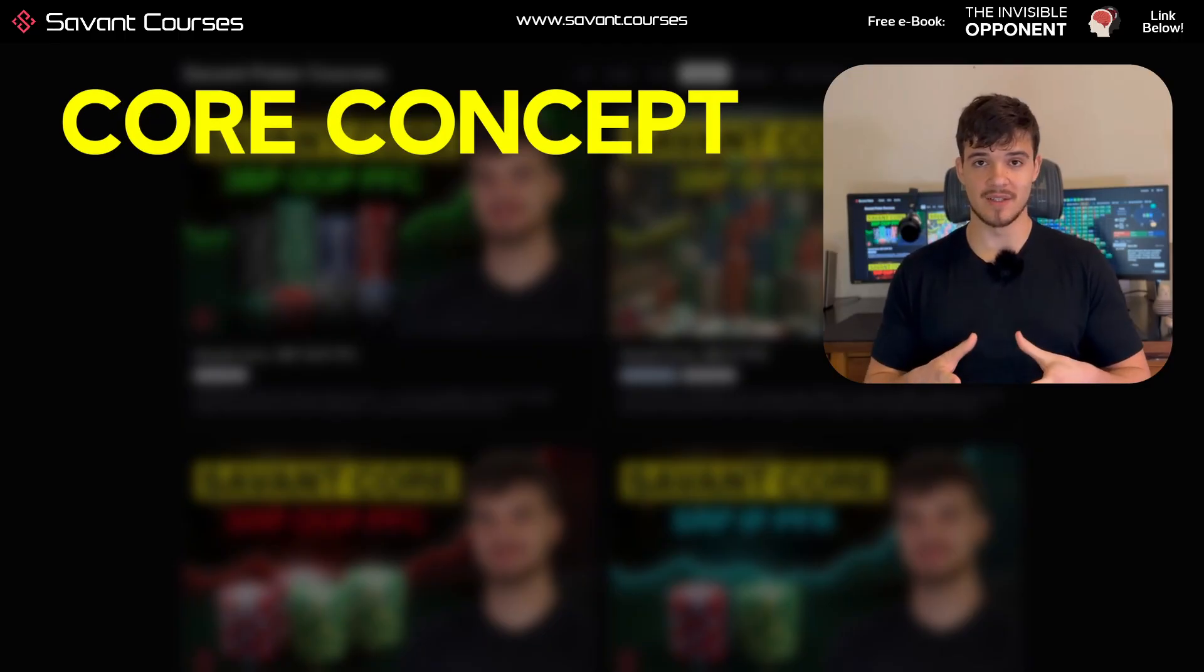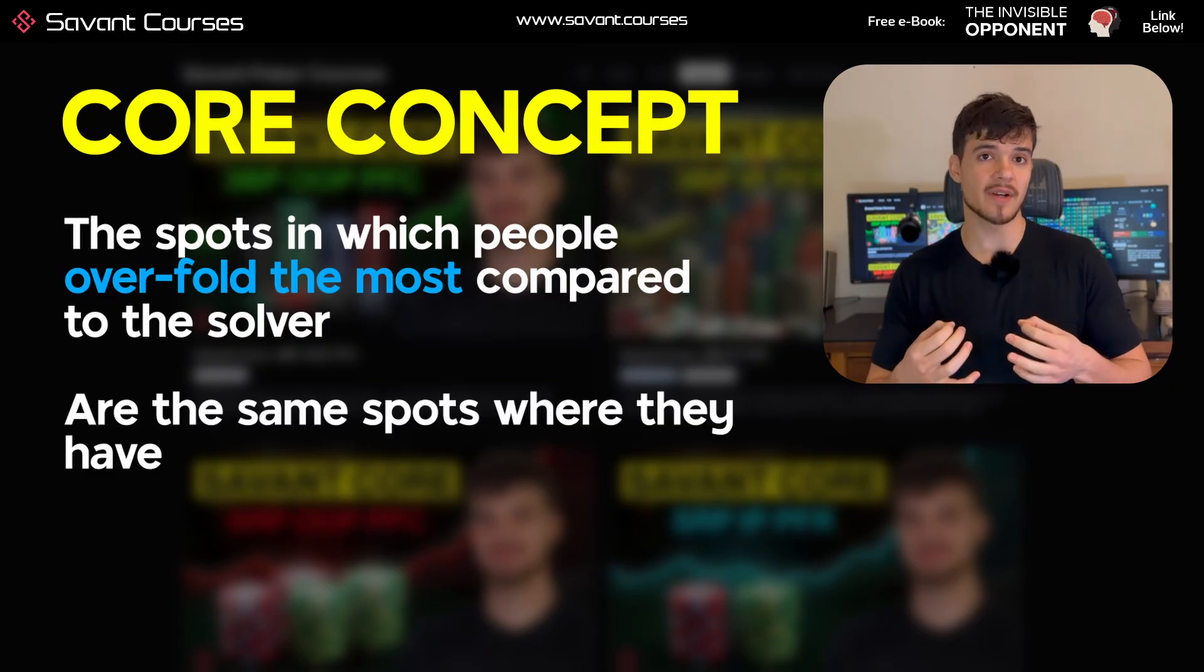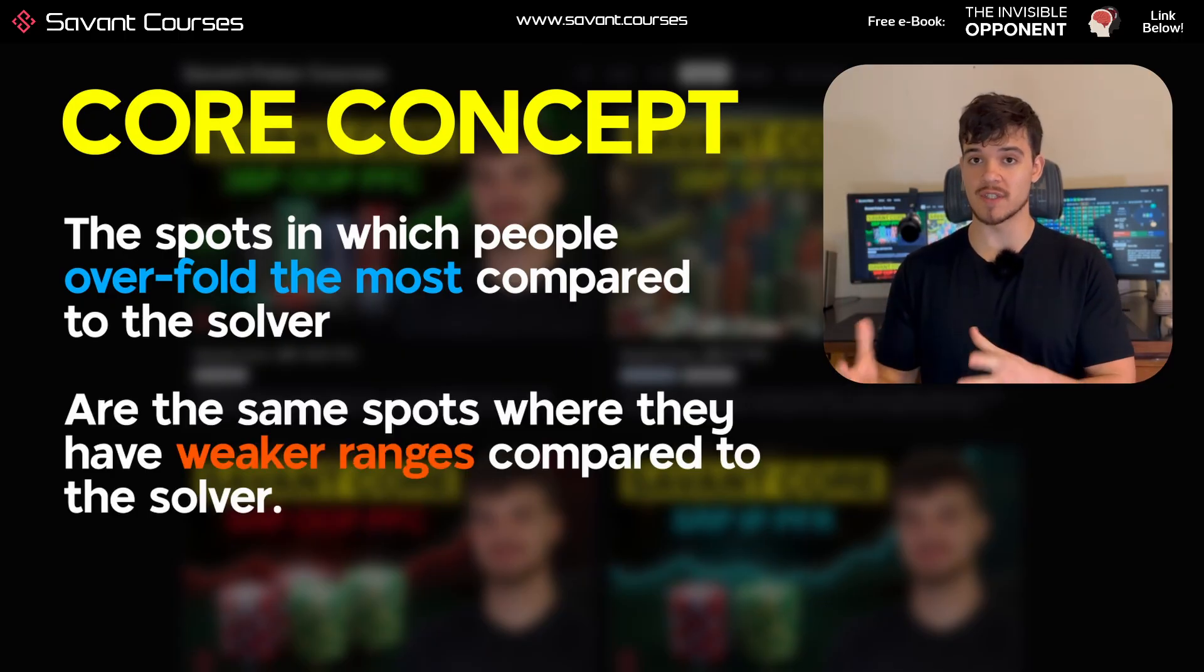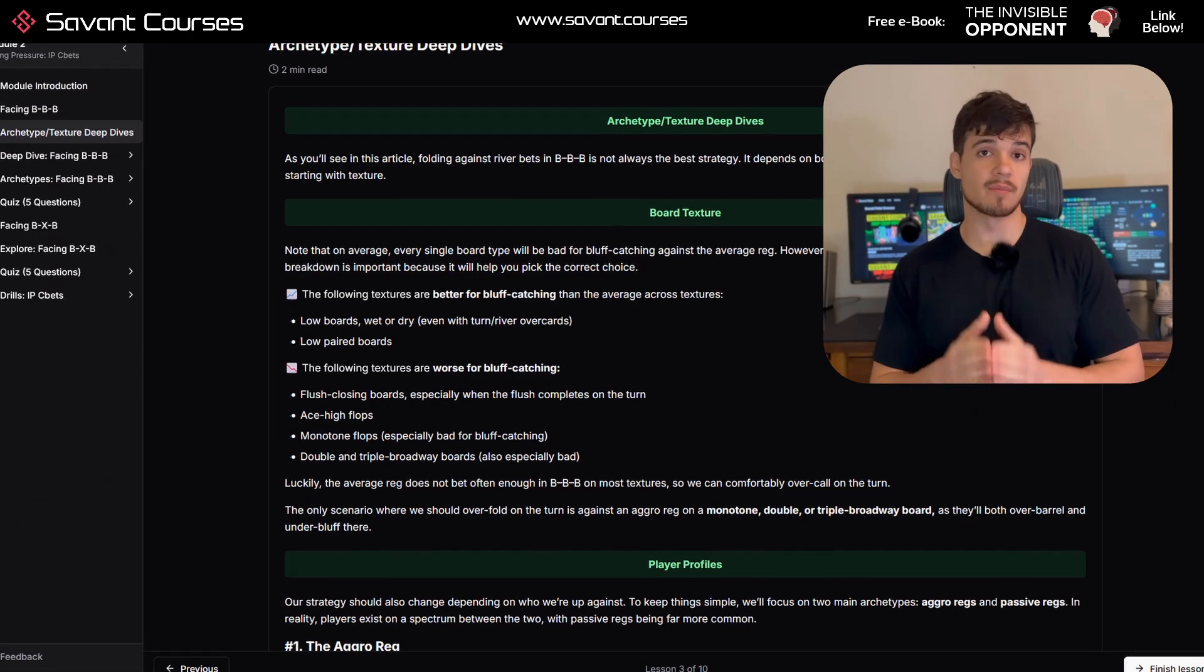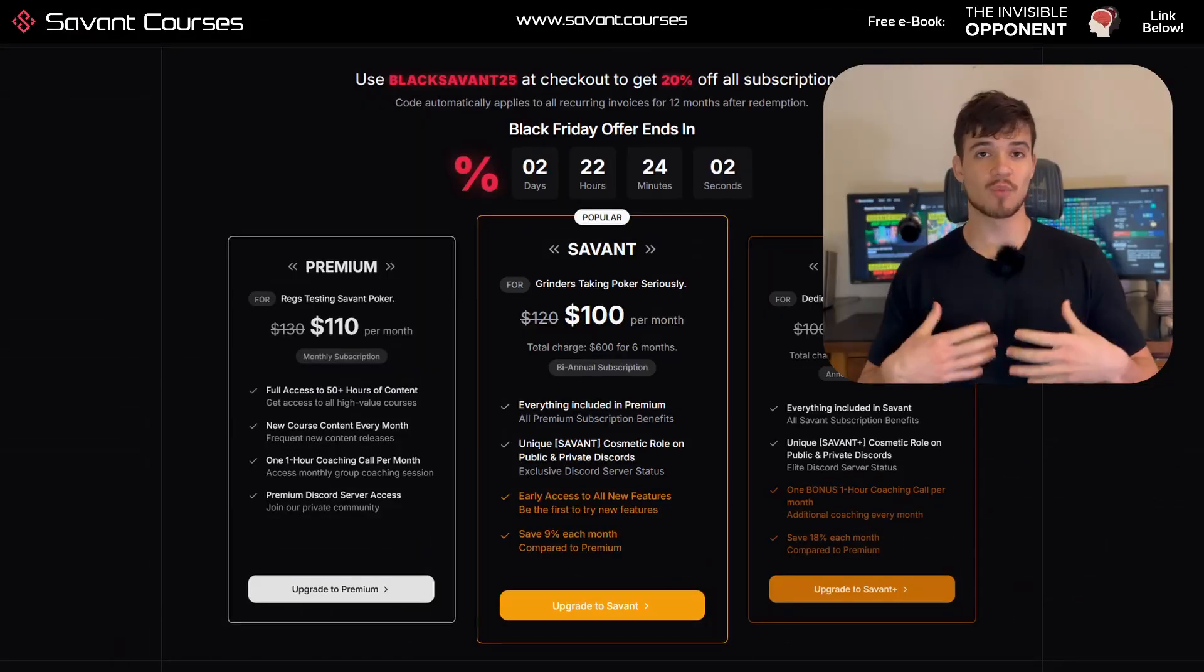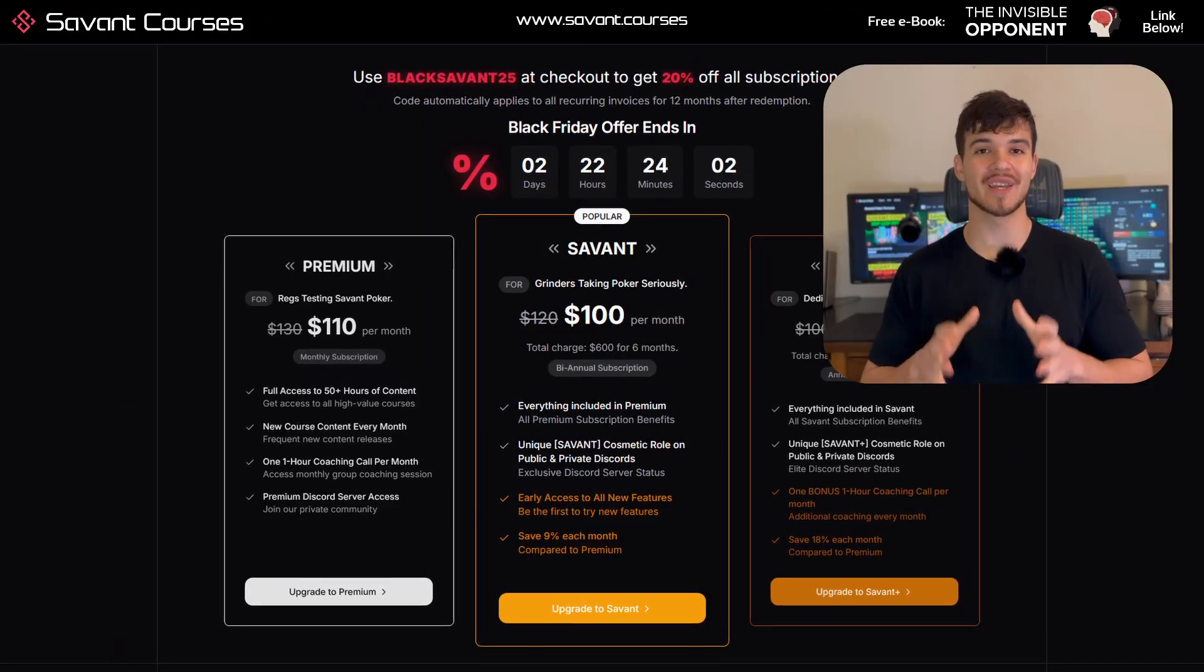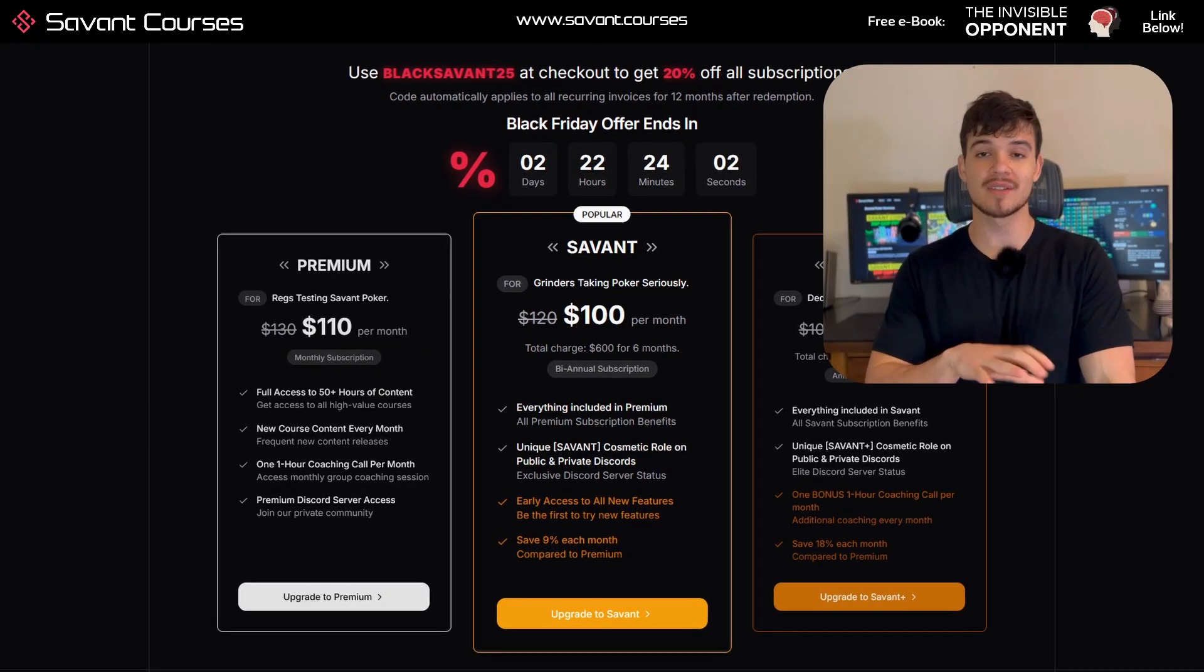I'm going to reveal one of the most valuable snippets of coaching to you, one of the core concepts that you'll encounter in Savant courses. And that is the lesson that the spots in which people overfold the most compared to the solver are the same spots where they have weaker ranges compared to the solver. This is a consistent trend that you'll encounter when studying thousands of unique data points. Much of Savant's modern, high-tech courses are built around trends like these, and I'll talk more about this later, but we're currently doing a limited-time Black Friday sale.